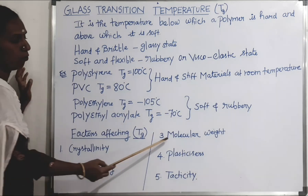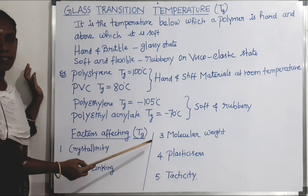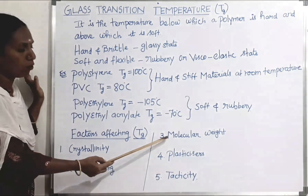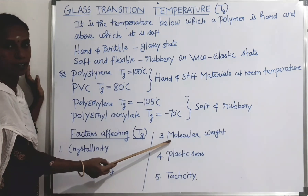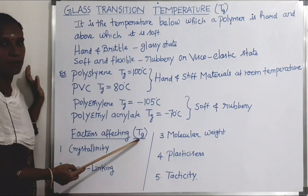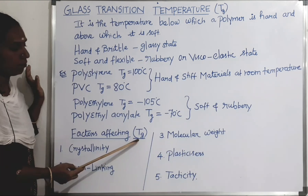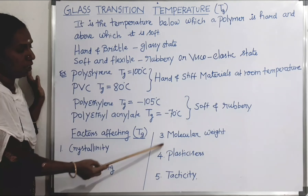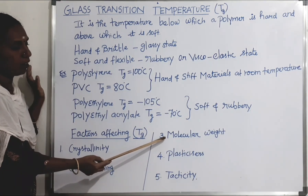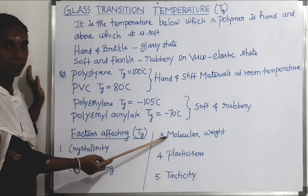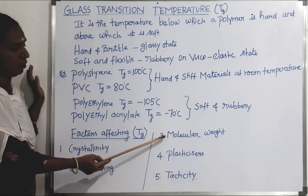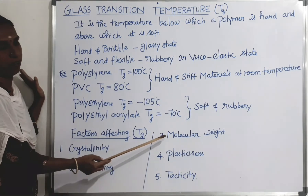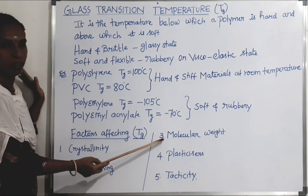The third factor is molecular weight. A polymer is generally a macromolecule with high molecular weight. If the molecular mass of the polymer increases, the glass transition temperature value also increases — up to a particular value. Beyond that value, the Tg does not increase further; it remains the same.